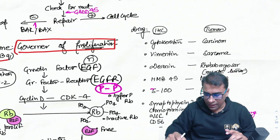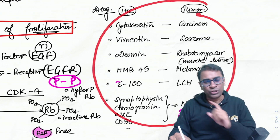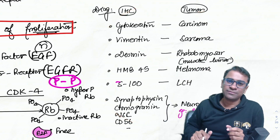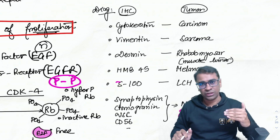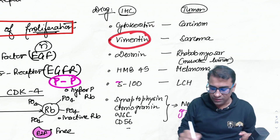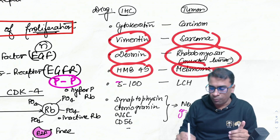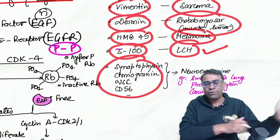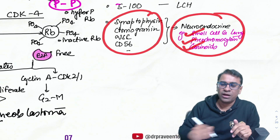The next topic is immunohistochemistry (IHC) — none of the tumors today are reported without IHC. Key markers: cytokeratin for carcinoma; vimentin for sarcoma; desmin for rhabdomyosarcoma (last year's NEET PG question); HMB45 for melanoma; S100 for Langerhans cell histiocytosis (this year's IHC question). Synaptophysin, chromogranin, neuron-specific enolase, and CD56 are markers for neuroendocrine tumors such as small cell cancer, pheochromocytoma, and carcinoids.